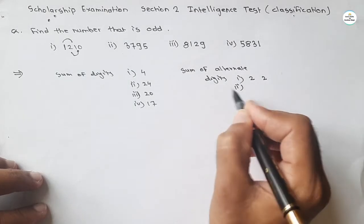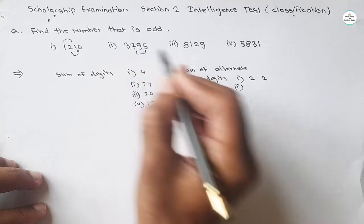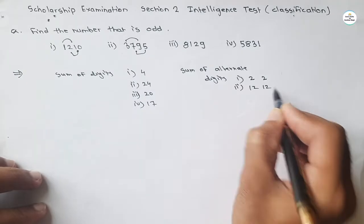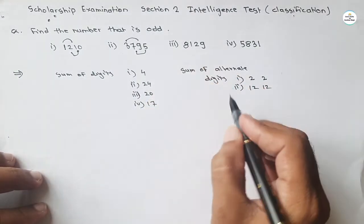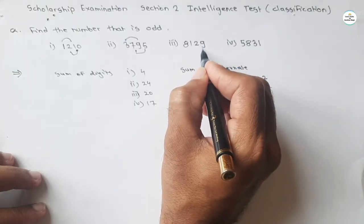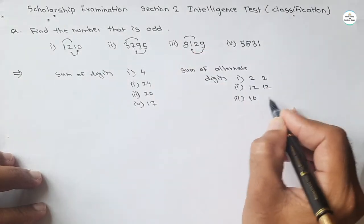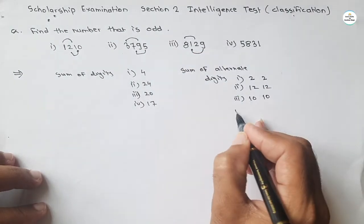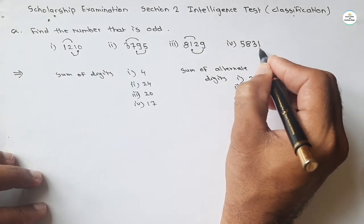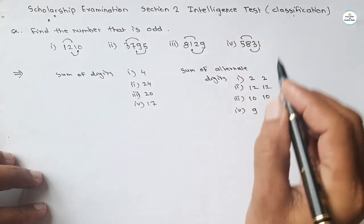For second one, 5 plus 7, 12, and 9 plus 3, 12. Are you getting? There is some relation. Then third one, 9 plus 1, 10, and 8 plus 2, that is 10. And fourth one, 1 plus 8, 9, and 3 plus 5, that is 8.